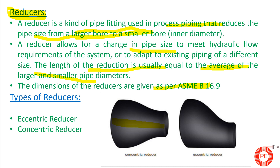There are two types of reducers used in industry, both having their own significance and usage. One is the eccentric reducer and the other is the concentric reducer. In an eccentric reducer, one horizontal side remains flat and unchanged — the reduction occurs only on the other end. In a concentric reducer, the reduction of the pipe is done from both ends.